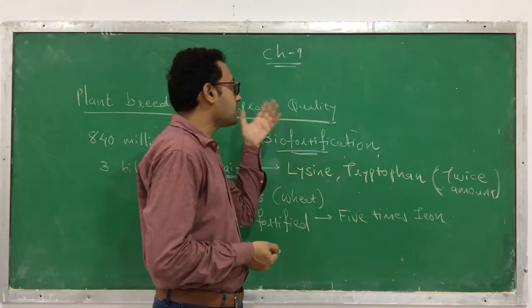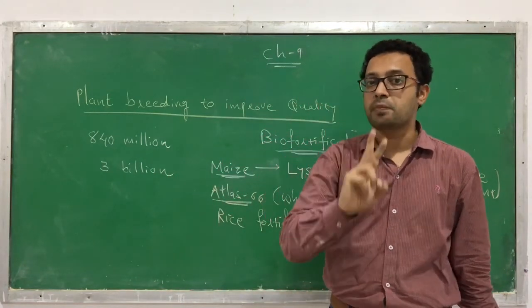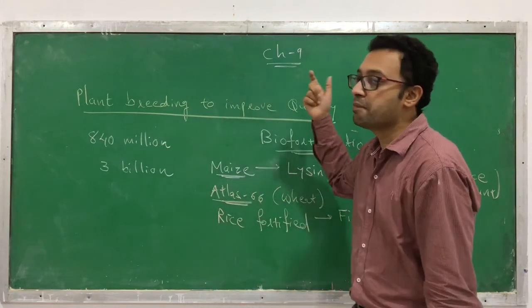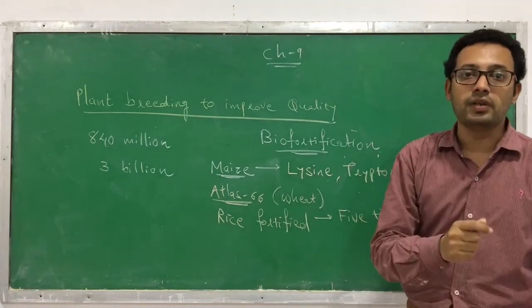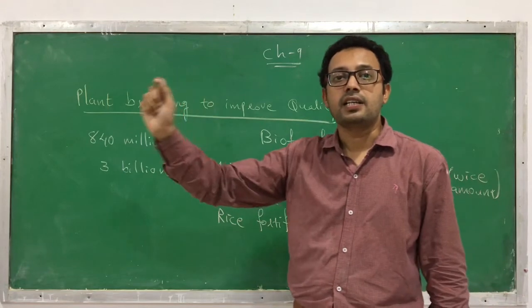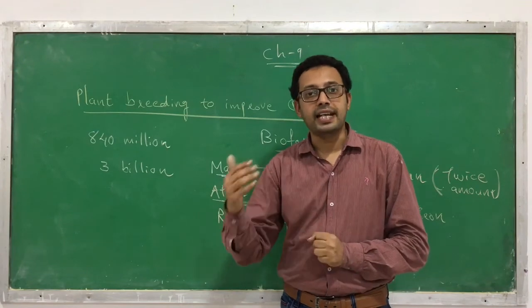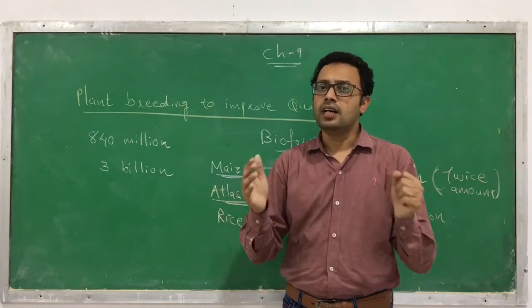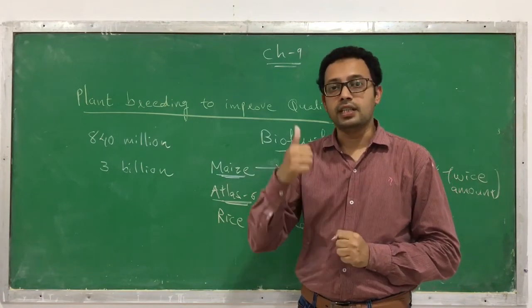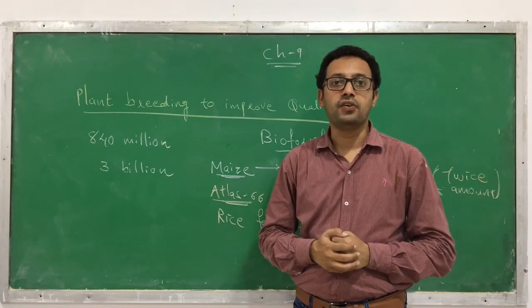This purpose is called biofortification. Today we have discussed two purposes of plant breeding: plant breeding to improve quality through biofortification, and plant breeding for pest and insect resistance. That's all about the purposes of plant breeding. In the next session we will learn another concept called single cell protein and tissue culture. Keep learning, keep watching, and like and subscribe this channel. Thank you for watching.